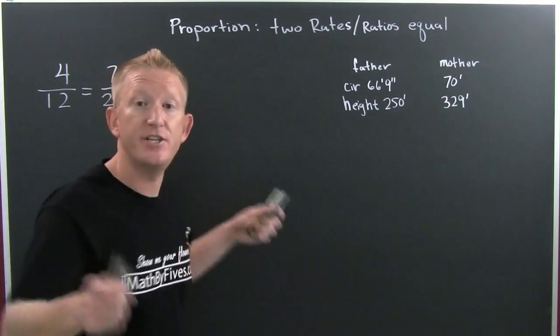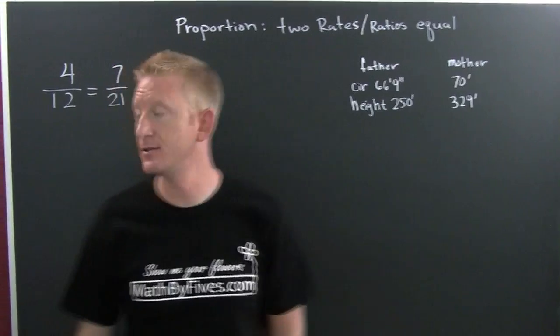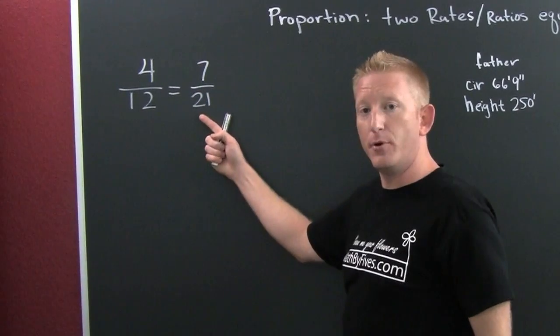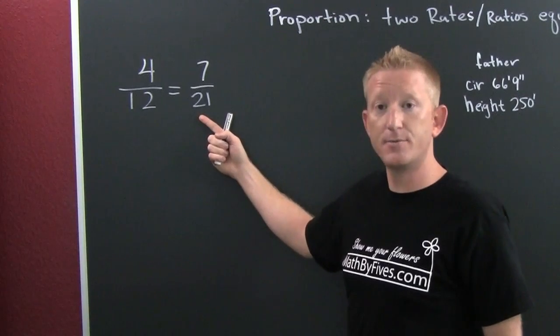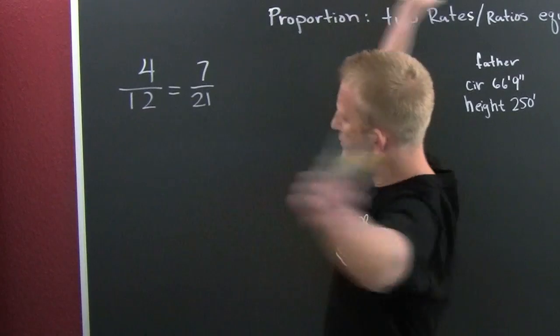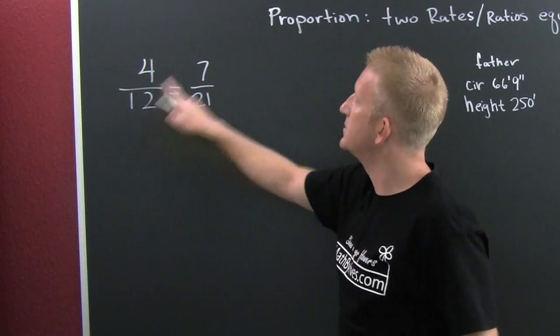Anyways, let's check to see whether or not these guys are in proportion. How are we going to do that? A little slick trick called cross multiplication. It's all whoosh. This one times that one, and this one times that one.